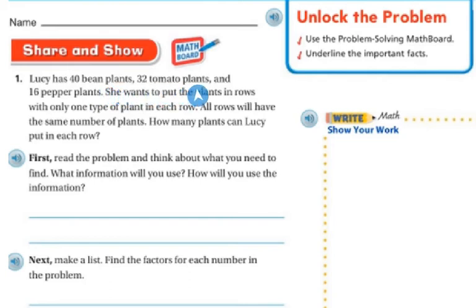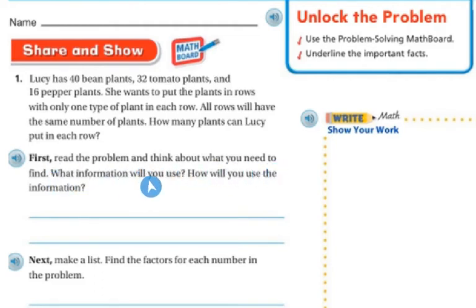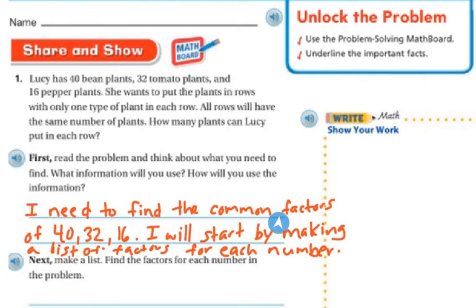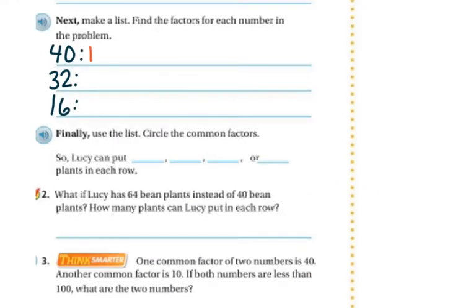Lucy has 40 bean plants, 32 tomato plants, and 16 pepper plants. She wants to put the plants in rows with only one type of plant in each row, and all rows will have the same number of plants. How many plants can Lucy plant in each row? This is exactly what we've been doing. I need to find the common factors of 40, 32, and 16, starting by listing all the factors. Factors of 40: 1 times 40, 2 times 20, 4 times 10, and 5 times 8.